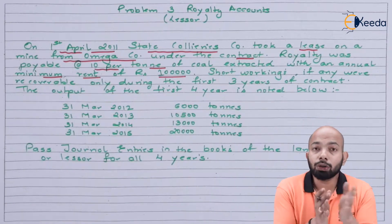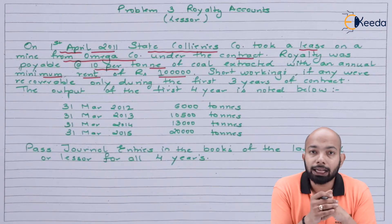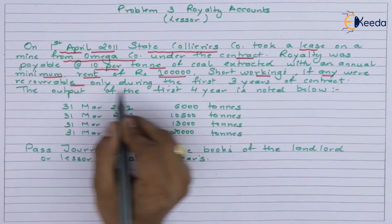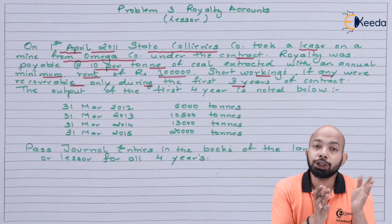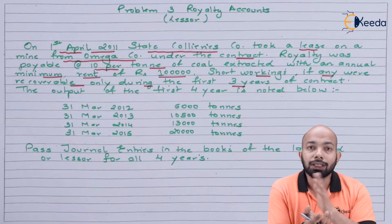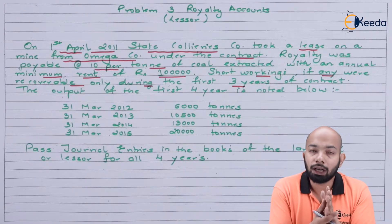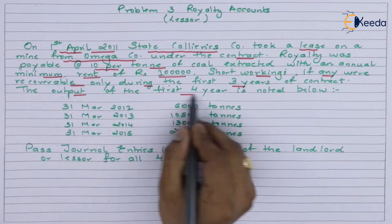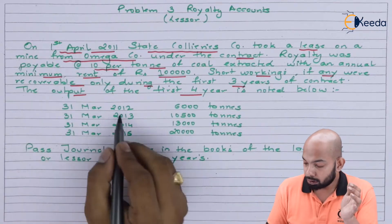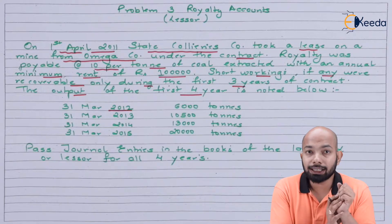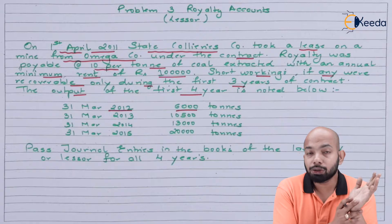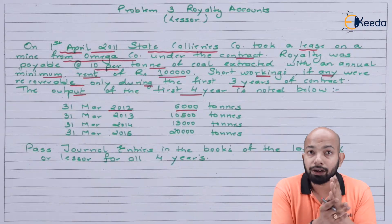The annual minimum rent is ₹1 lakh, as stated in the question. Any short workings are recoverable only in the first three years; after three years, no short working recovery is allowed. The output for the first four years has been given: for 31st March 2012 it was 6,000 tons, and for 31st March 2013 it was 10,500 tons.